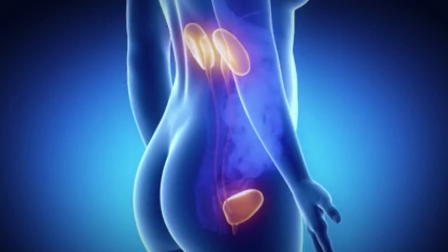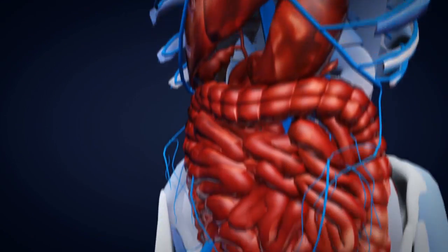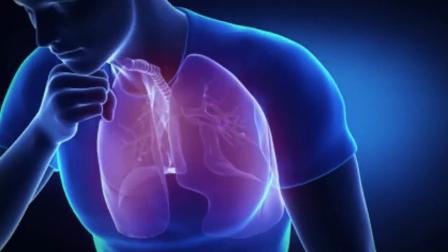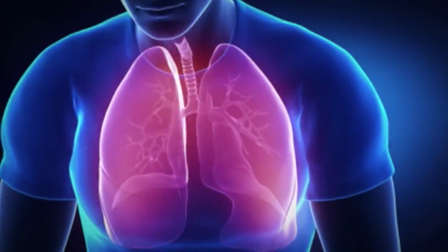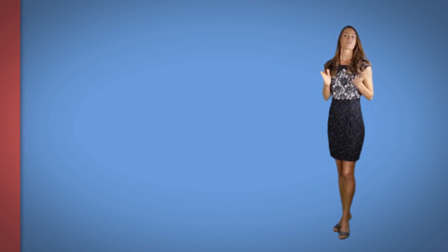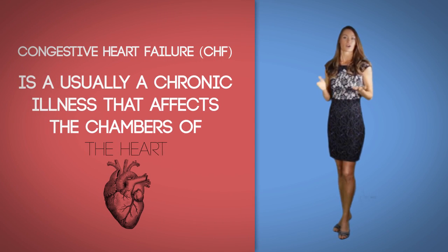The body then can become congested as the fluid builds up in the arms, legs, ankles, feet, lungs, or other organs. This condition is described now as congestive heart failure. Congestive heart failure is usually a chronic illness that affects the chambers of the heart.